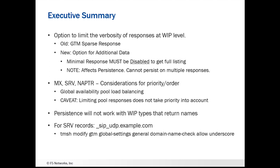You need to note that this can affect persistence, because if you're responding with multiple records to a request, how does GTM know which one the client actually used to persist them? So that does affect persistence and you need to be aware of that. Also, MX, SRV, and NAPTR records have a priority within the records themselves that is meaningful to devices doing those lookups. But GTM itself doesn't have any knowledge about that protocol's priority ordering rules. So if you want records to come back in a particular order all the time, you're probably going to want to use global availability pool load balancing — for example, so that priority 10 is always the first record returned.